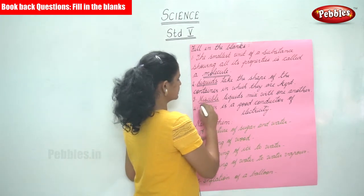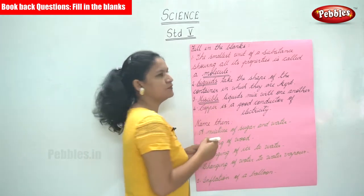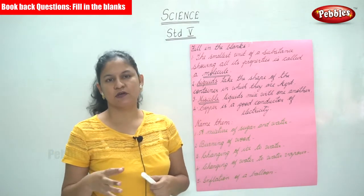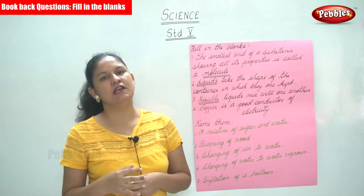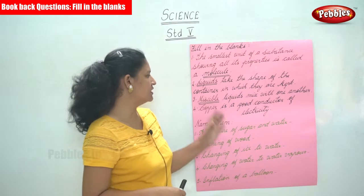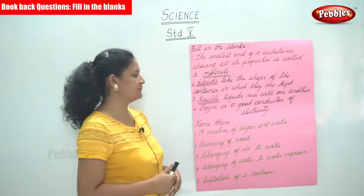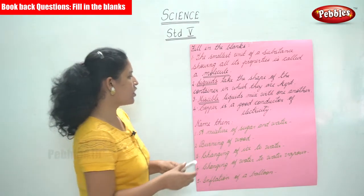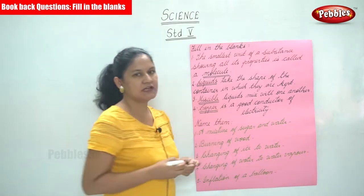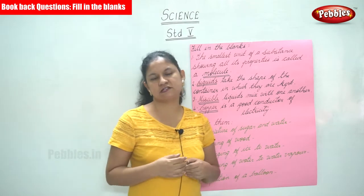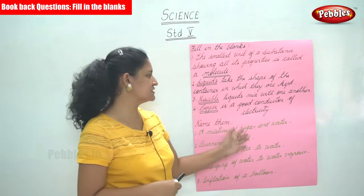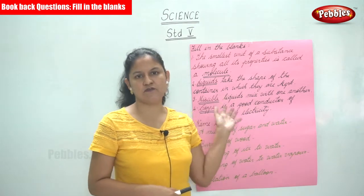The next is: miscible liquids mix with one another. When we take two liquids and pour them into one vessel, we see that the two liquids mix together — those are termed as miscible liquids. The last is: copper is a good conductor of electricity. Hence, most electrical wires use copper because it is a good conductor of electricity.